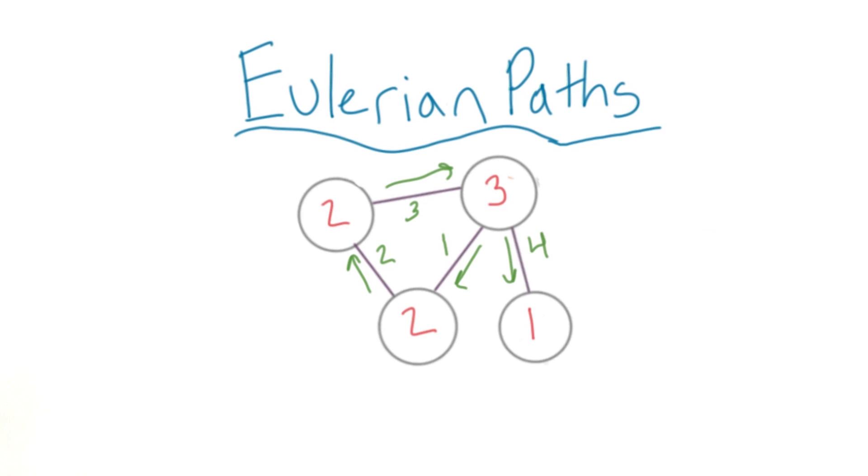Eulerian paths are a little bit more lenient. So it's okay for a graph to have two nodes with an odd degree, as long as they're the start and end of the path.